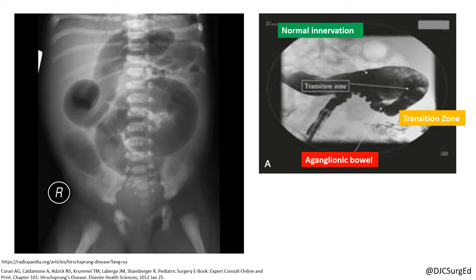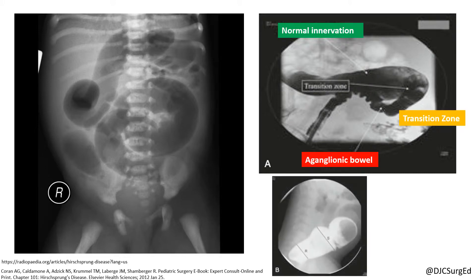Other findings include a reversed rectosigmoid index, where the sigmoid colon is abnormally wider than the rectum due to progressive dilation from a functional obstruction. A rectal suction biopsy demonstrating an absence of ganglion cells is the gold standard for diagnosis.